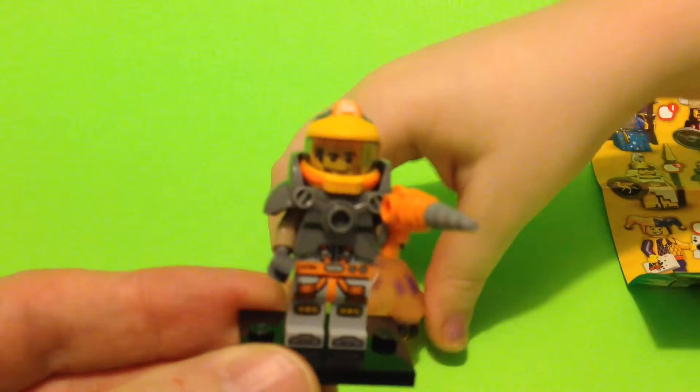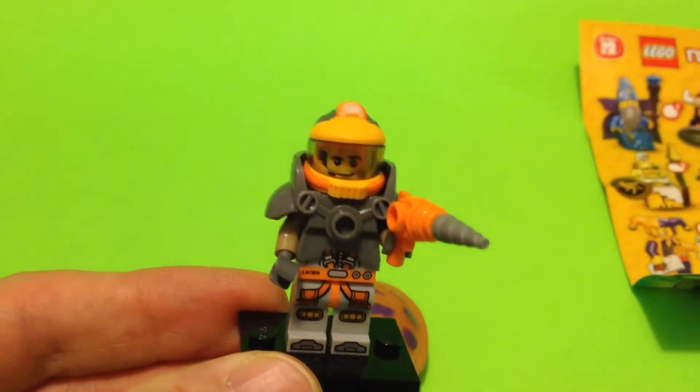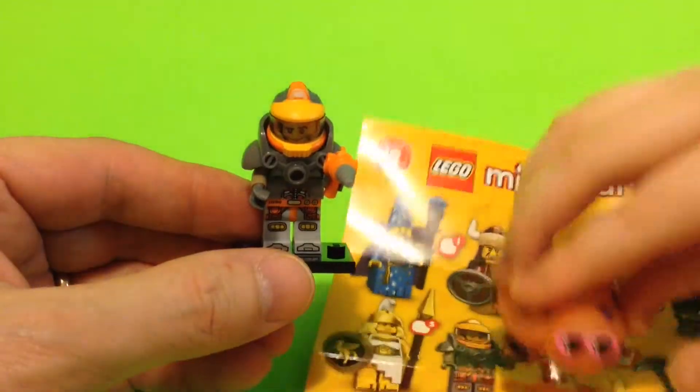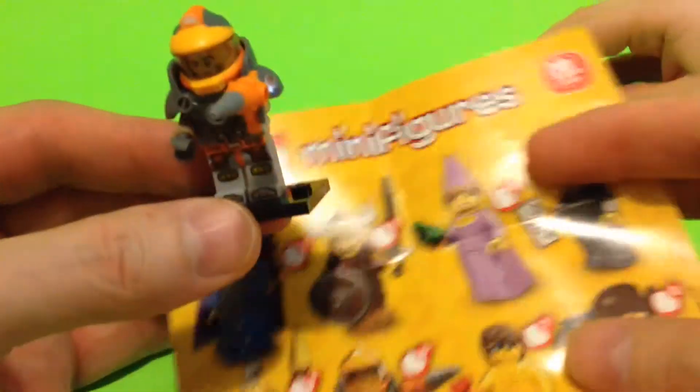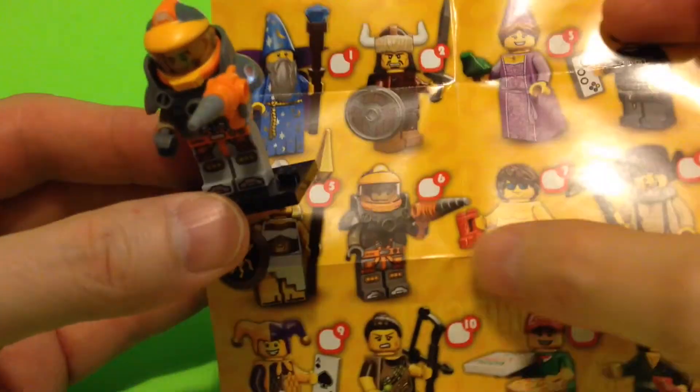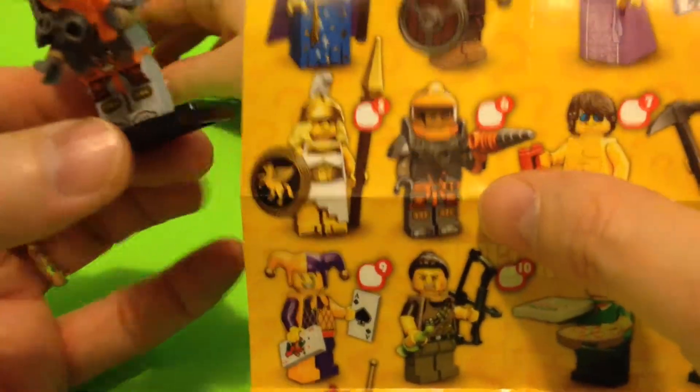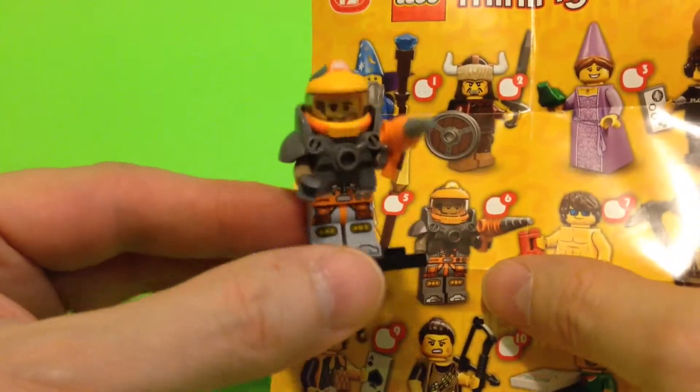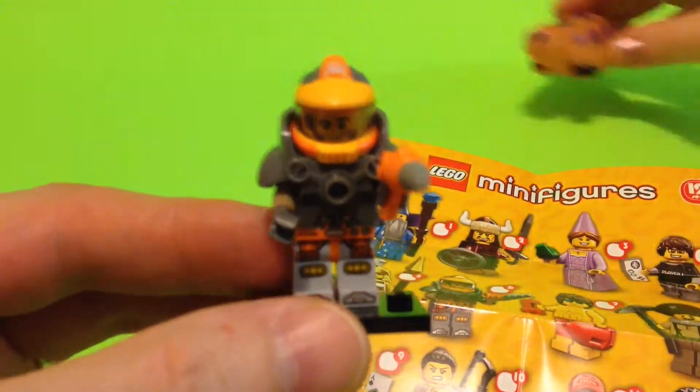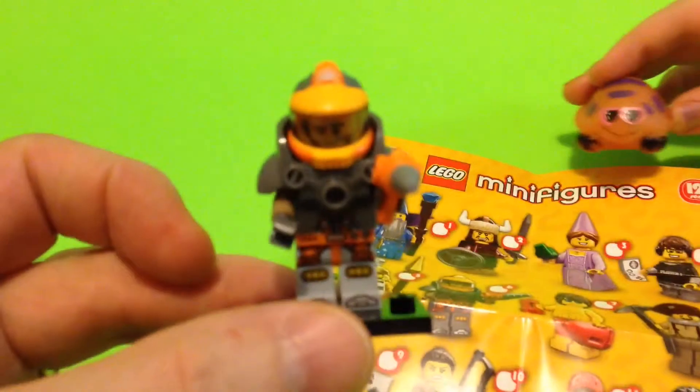And I'm not for sure his name. But we'll find out what his name is. Alright. I figured out which one this was. This is out of the Series 12. Number six minifigure. His name is Space Miner. Wow. Looks pretty cool, I think. Space Miner.